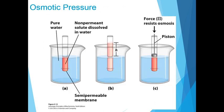Osmotic pressure is a colligative property that has direct relevance to biological systems. To understand this, let us look at an experiment. In setup A, a beaker contains pure water, and a tube containing an aqueous solution — water with a solute dissolved in it — is immersed in it. The tube has a semi-permeable membrane which allows the passage of only water, not the solute.